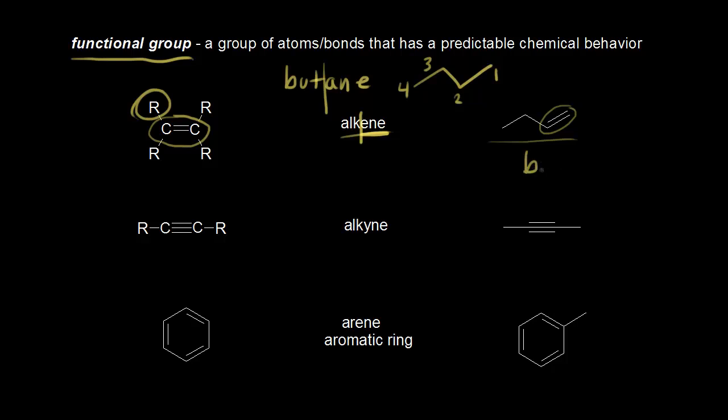Let me write that out here. So this is butene. If we number this molecule, we start with the double bond and give this carbon right here a number one. Then we have a number two, number three for this carbon, and number four. Our double bond starts at carbon one, so we put a one in front and call this 1-butene.